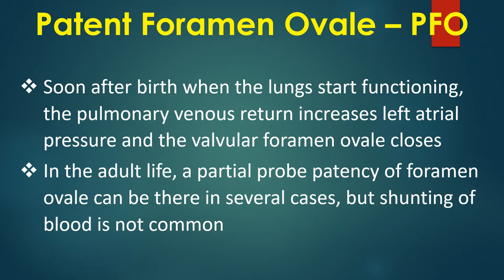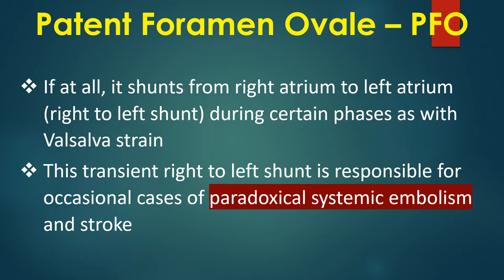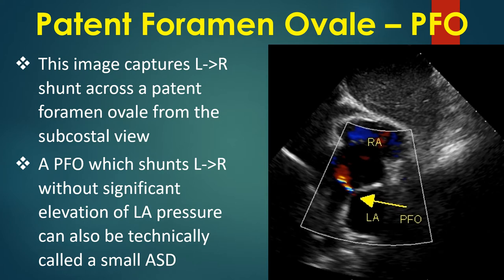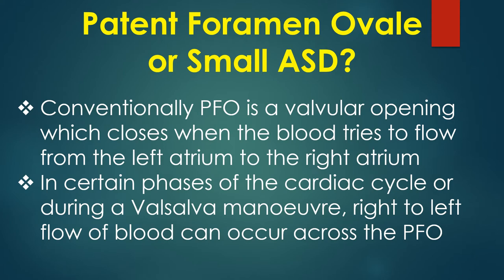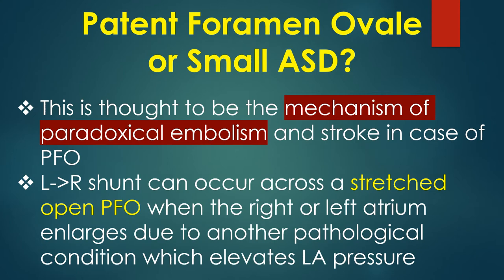In adult life, partial patency of the foramen ovale can exist in several cases, but shunting of blood is not common. If shunting occurs, it is from right atrium to left atrium during certain phases such as Valsalva strain. This transient right to left shunt is responsible for occasional paradoxical systemic embolism and stroke. An echocardiogram captures left to right shunt across a patent foramen ovale from the subcoastal view (RA – right atrium, LA – left atrium, PFO – patent foramen ovale). A PFO that shunts left to right without significant elevation of left atrial pressure can technically be called a small atrial septal defect. Conventionally, PFO is a valvular opening that closes when blood tries to flow from left atrium to right atrium; right to left flow can occur across a PFO during certain phases of the cardiac cycle or during a Valsalva maneuver — the mechanism of paradoxical embolism and stroke.